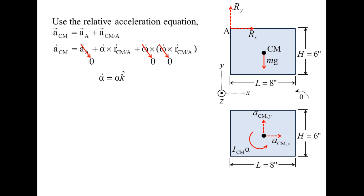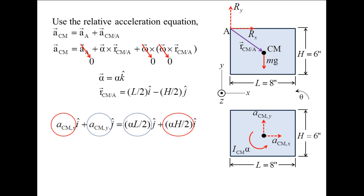The angular acceleration vector has the magnitude of alpha and points in the z direction. RCMA starts at point A and terminates at the center of mass. The center of mass is located one-half L toward the right and one-half H downward from point A. Take the cross product on the right-hand side of the equation and decompose ACM into its components on the left-hand side. Equating the x terms and the y terms, we obtain two additional equations.